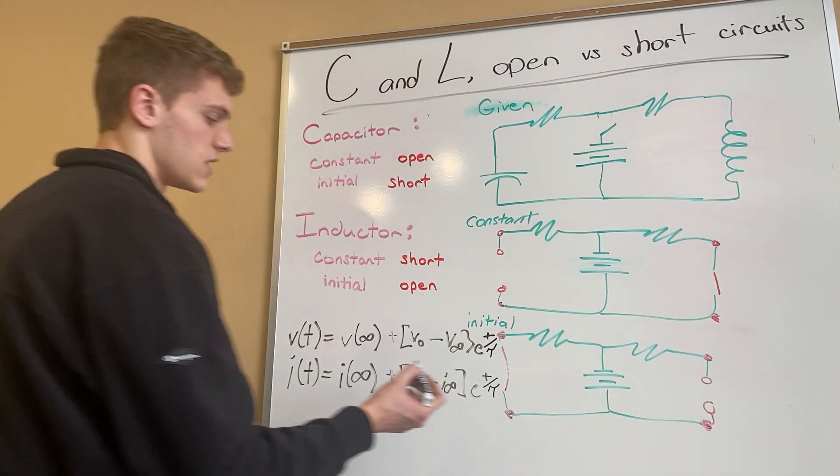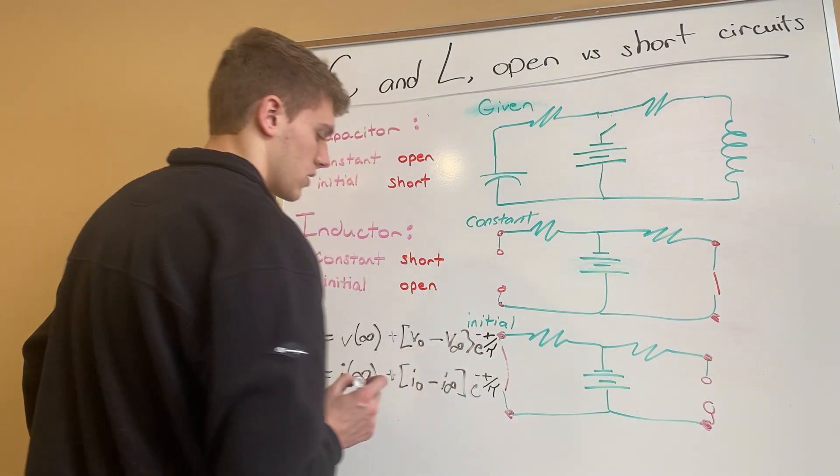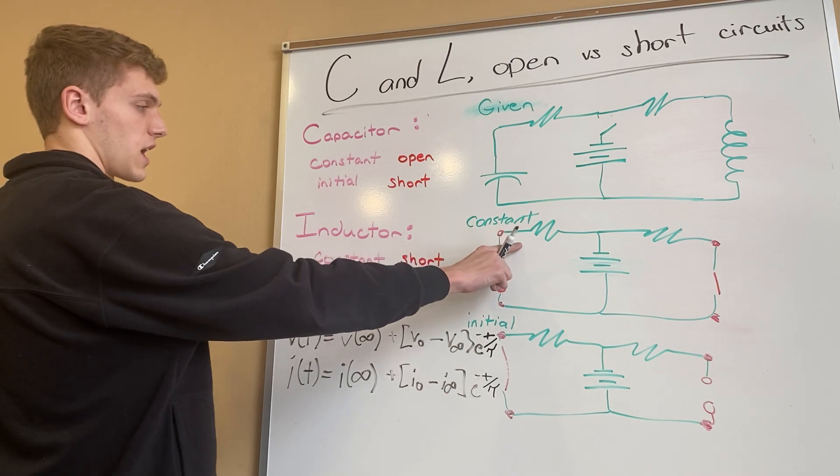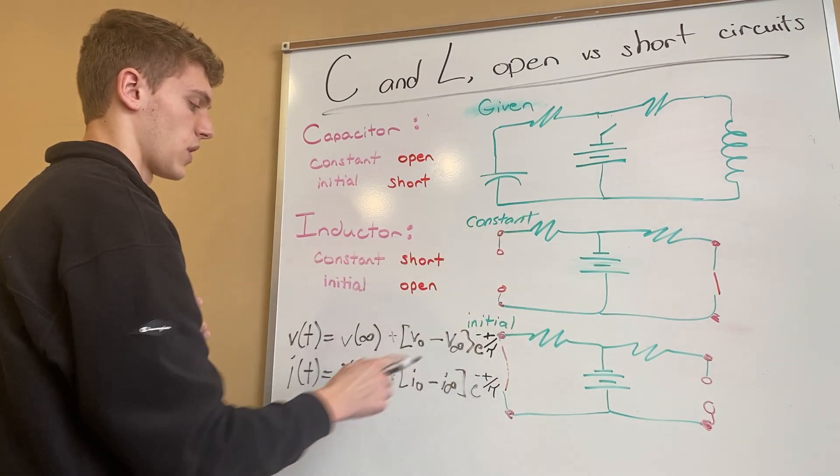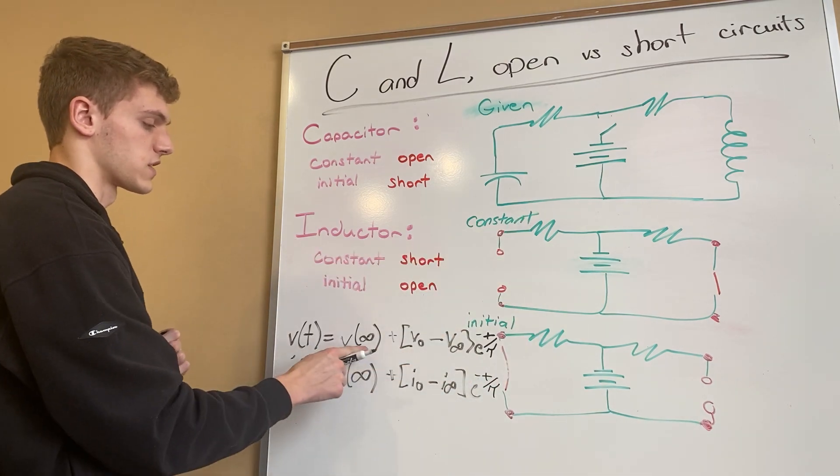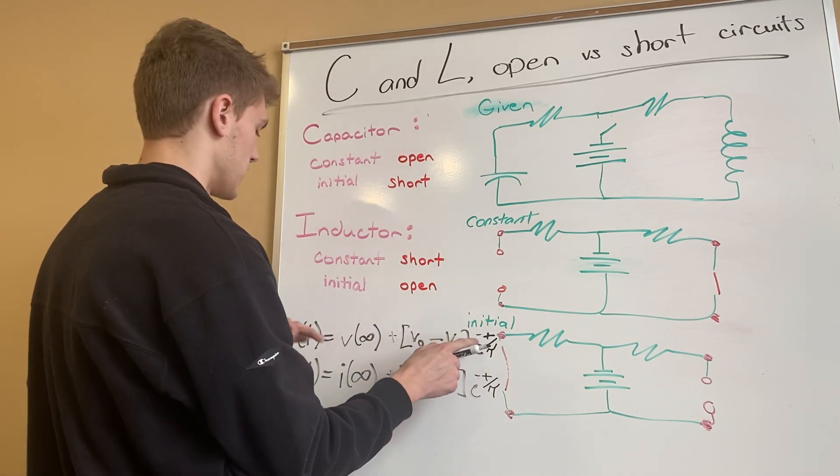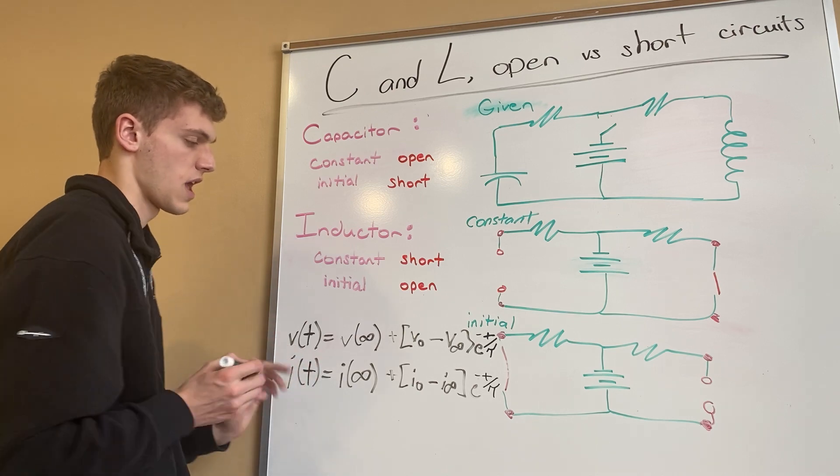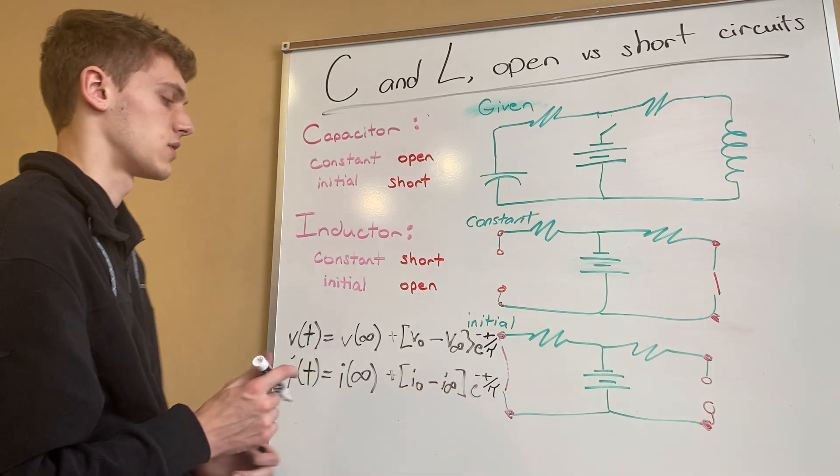So that we would find our voltage or current after it's been a constant or an initial. Our initial would be zero, our constant would be our infinities. We have e, the time would be the time over here that we're looking for, and our time constant would be like our time constant is R Thevenin times C.